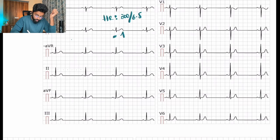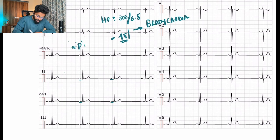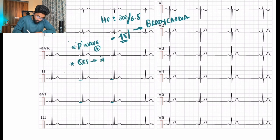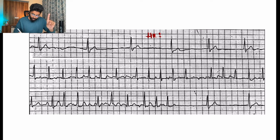For sinus bradycardia: heart rate is around 45, which is less than 60. The P wave is present and normal, and the PR interval is normal — nothing less than normal. This is sinus bradycardia.